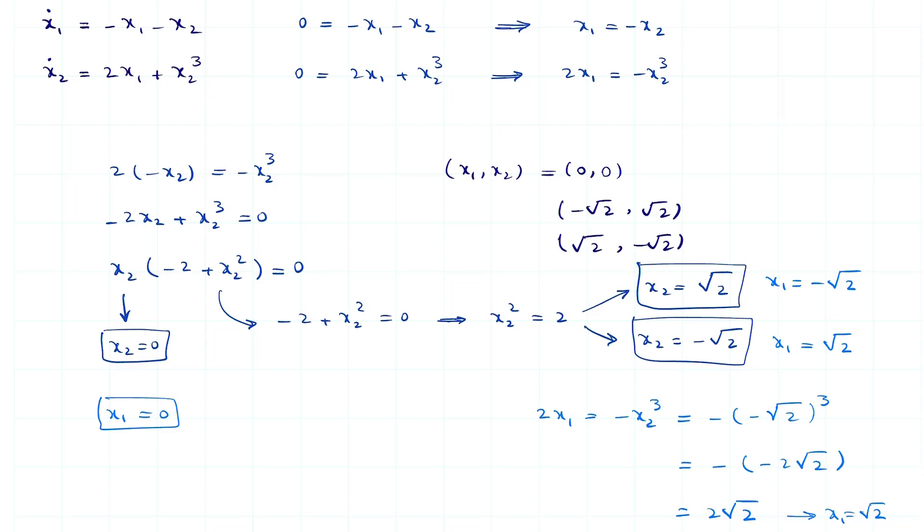In general, a nonlinear dynamical system can have 0, 1 or more equilibrium points. It can even have an infinite number of equilibrium points as we saw in the pendulum example.